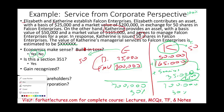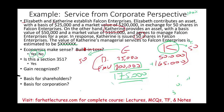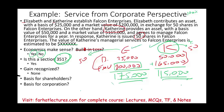What is the gain recognized? First let's see the gain realized. For Elizabeth, she contributed an asset worth $200,000 with a basis of $25,000, so the realized gain is $175,000. For Catherine, she contributed an asset worth $165,000 with a basis of $50,000, so her realized gain is $115,000. How much is recognized? None — because we have Section 351, Catherine is counted as part of it, and together they control 100%, more than 80%.